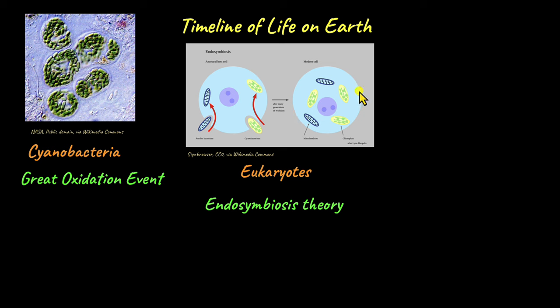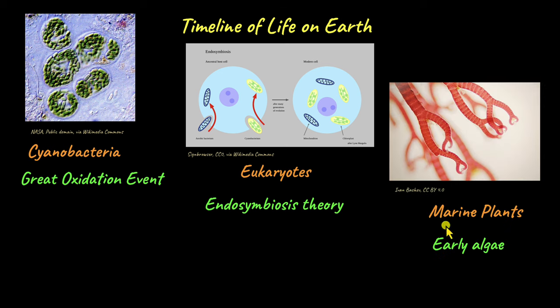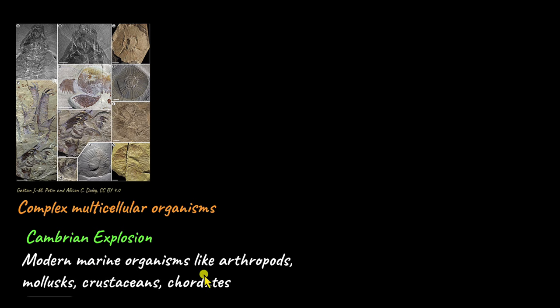From simple eukaryotes, the first algae species evolved as the marine plants — algae were the first plants to colonize the water. They began filling the oceans with more and more oxygen. As eukaryotes became increasingly complex, this led to the formation of multicellular animals as well. There was a time period known as the Cambrian explosion, when major marine animal phyla appeared on Earth, like arthropods, molluscs, crustaceans, and chordates that lived in water. At this point, life on Earth had still not moved to land.